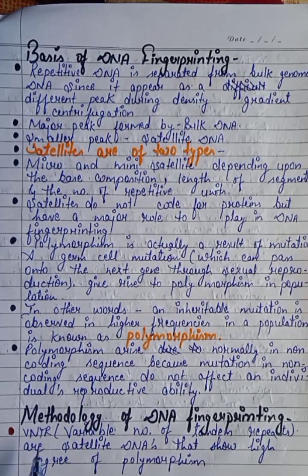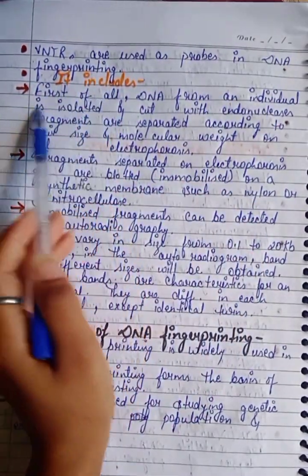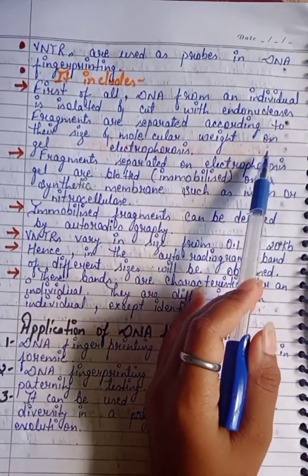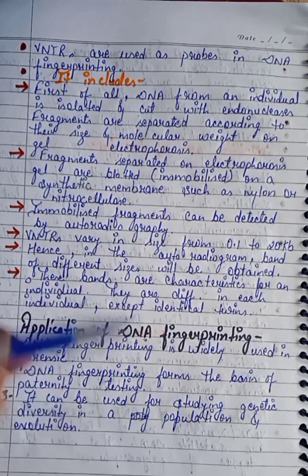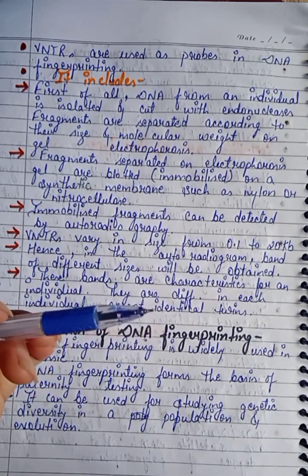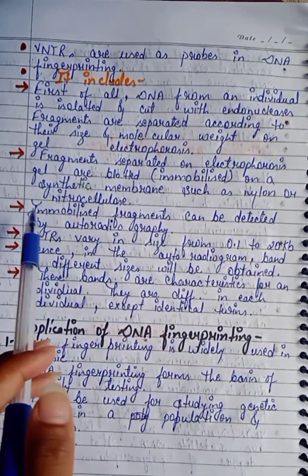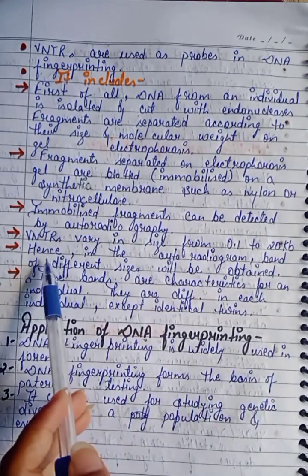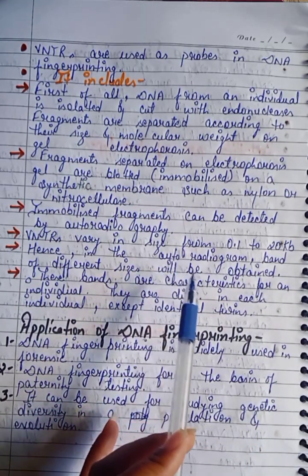Methodology of DNA Fingerprinting uses VNTRs — Variable Number of Tandem Repeats — which are satellite DNA showing a high degree of polymorphism. First, DNA from an individual is isolated and cut with restriction endonuclease; fragments are separated according to size and molecular weight on gel electrophoresis. Fragments are then blotted onto synthetic membranes such as nylon and nitrocellulose. Immobilized fragments are detected by autoradiography. VNTRs vary in size from 0.1 to 20 kb, so bands of different sizes are obtained in the autoradiogram.